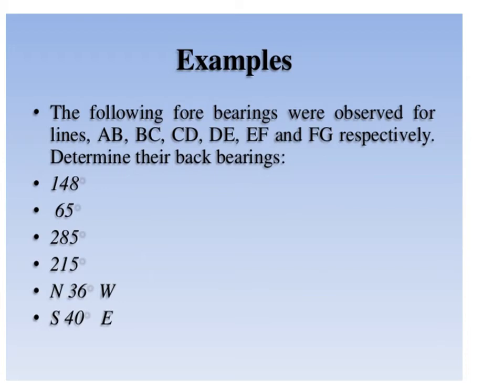We are now solving problems related to calculating back bearing from forward bearing. For a forward bearing of 140 degrees, since this value is less than 180 degrees, we add 180 degrees to get the back bearing. Similarly, for 65 degrees, we add 180 degrees. For 285 degrees, since this value is more than 180 degrees, we subtract 180 degrees. For 215 degrees, since it is also more than 180 degrees, we subtract 180 degrees to get the back bearing. The difference between forward bearing and back bearing is always 180 degrees.